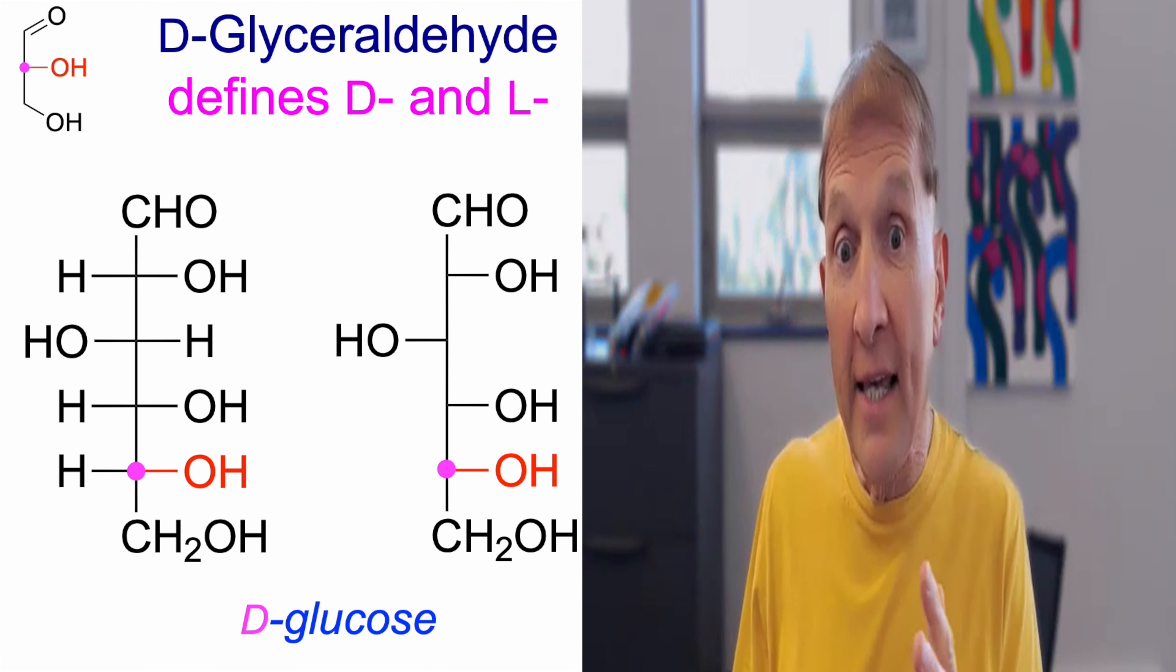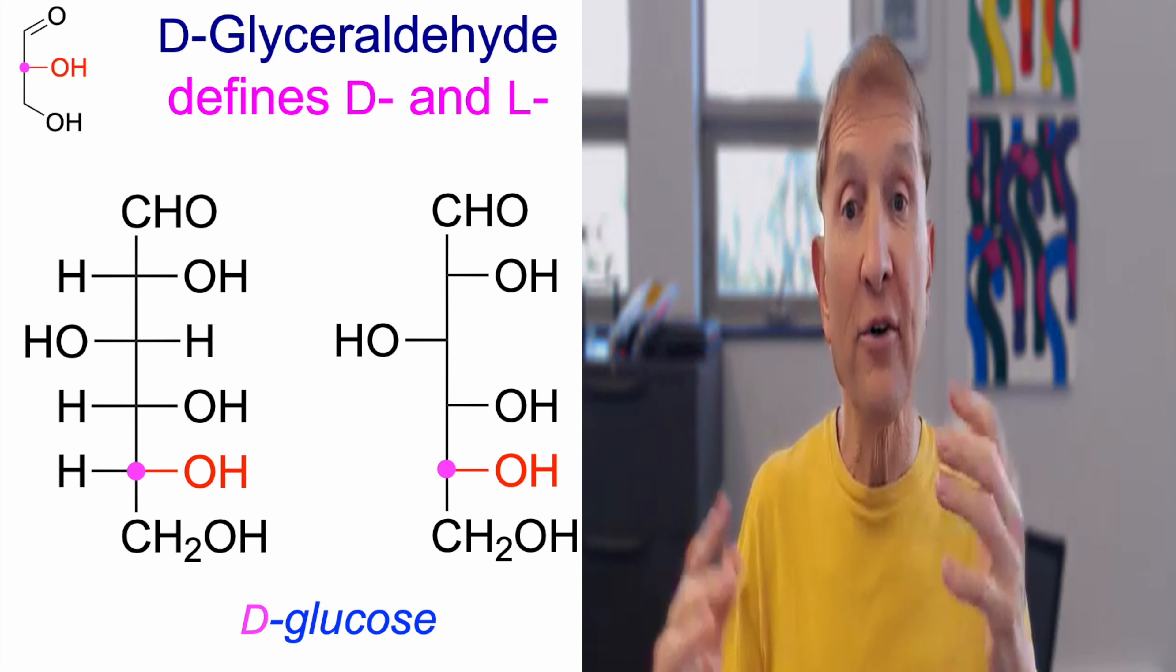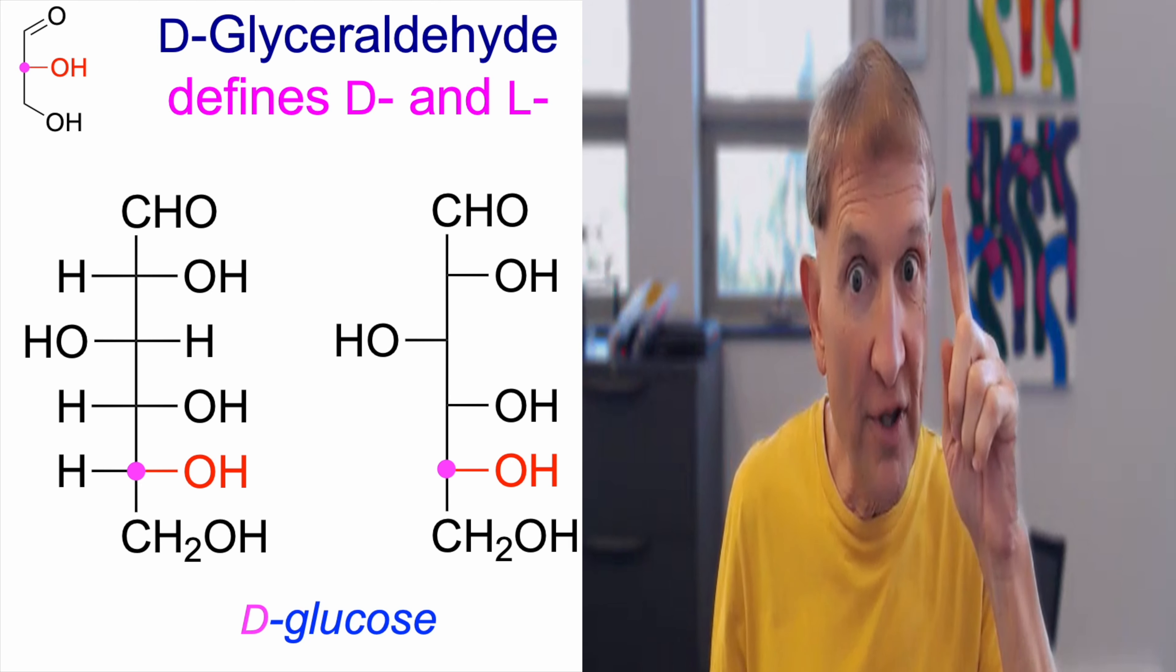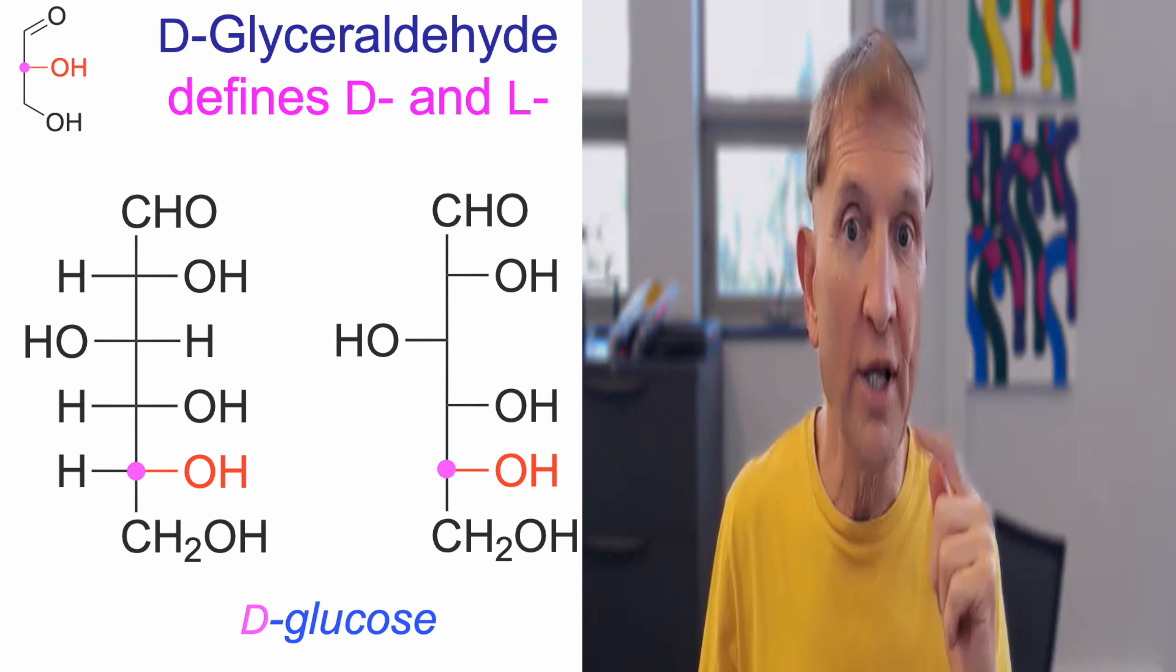This is D-glucose. It doesn't matter if you show the hydrogens or not. Just show the OH and look for the last chiral center in the chain. If the OH is on the right, that's a D sugar.